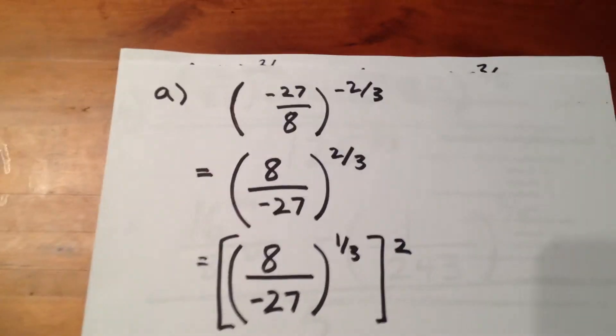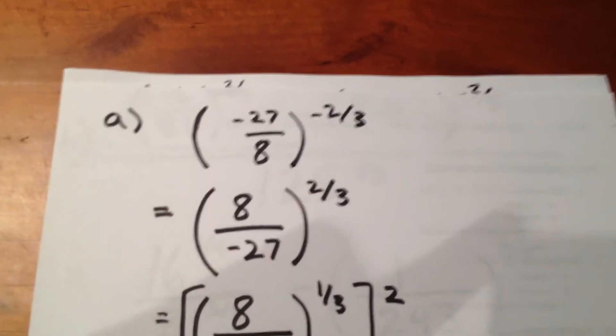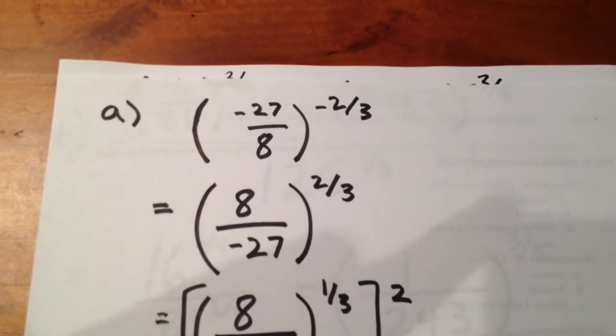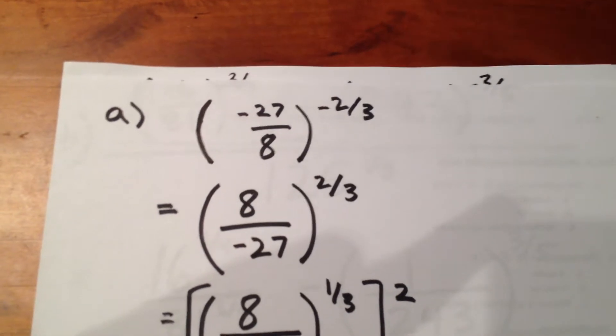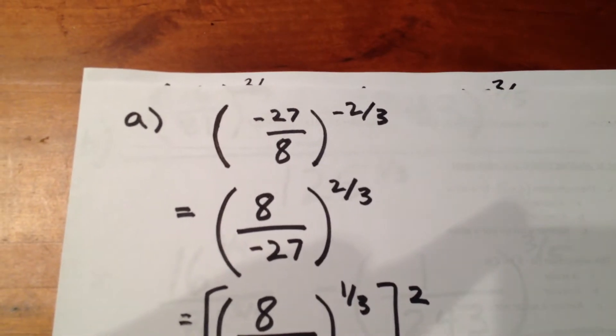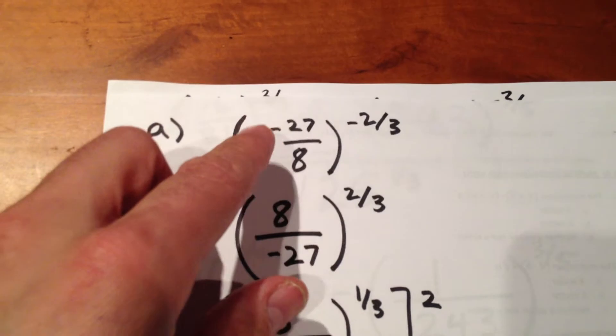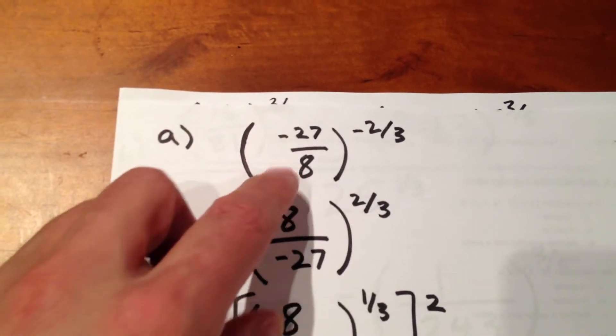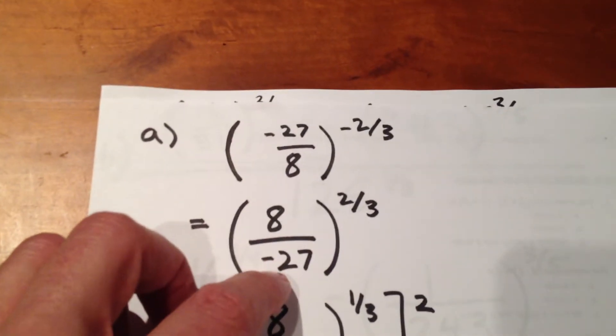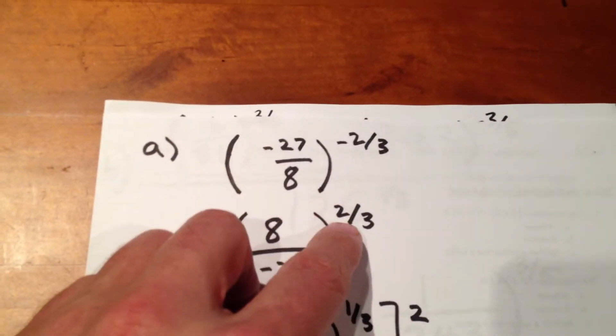Well, the first thing we do is we recognize that a negative exponent is going to become a positive exponent if we take the reciprocal of the base. So, we can make negative 27 over 8 into 8 over negative 27, and change the sign of the exponent.